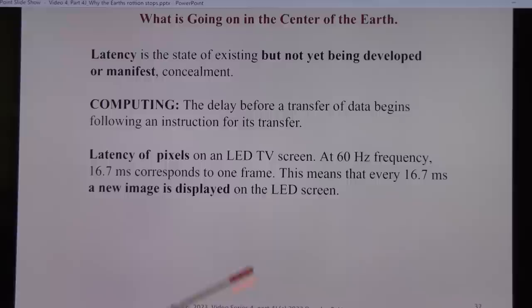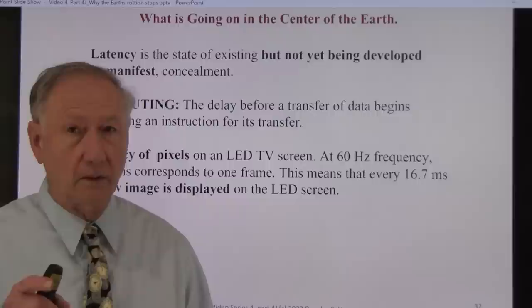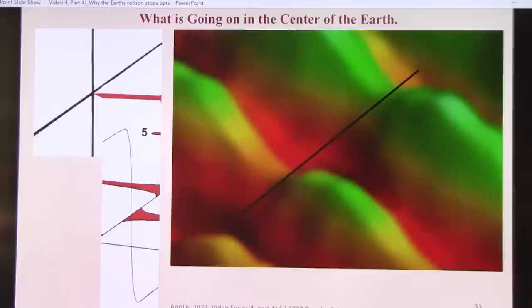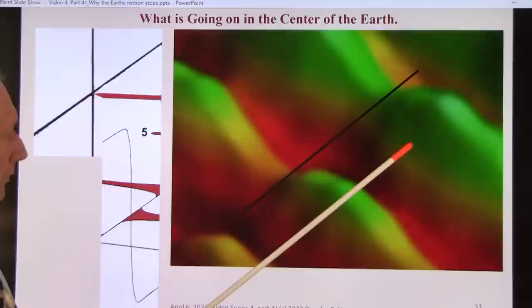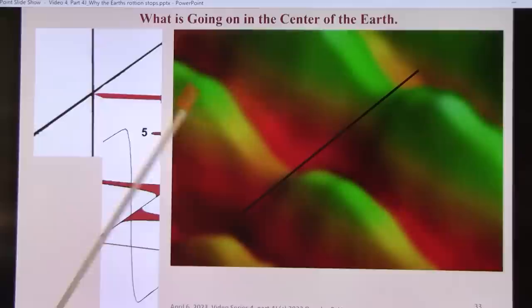Latency of a pixel on an LED screen. At 60 hertz, that represents 16.7 milliseconds corresponding to one frame. That means that every 16.7 milliseconds, a new image is displayed on the LED screen. Well, what happens when it doesn't send the electron to that pixel? You don't see anything. The pixel's not on. Back to our Italian friends who made that photograph of a light. Here's your pulse. That's where the atom was created. And we've got a valley here. We've got a valley down here. Here's the times when it's created. Valley, and then created.